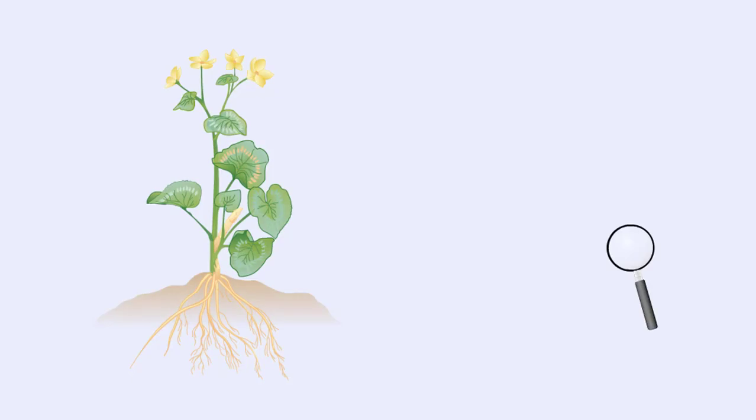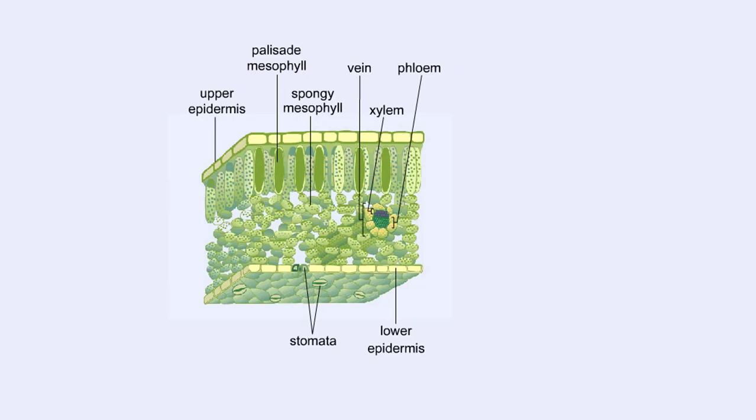The leaf is the principal photosynthetic organ of the plant. This is a cross-section of a leaf. The rectangular-shaped cells are part of the photosynthetic tissue called the palisade mesophyll.